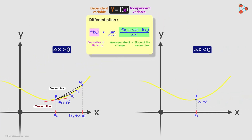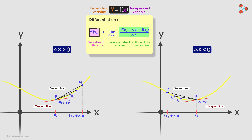This would be true even if we take delta x to be less than zero. Then x0 plus delta x will be somewhere here on the x axis, and as we find the average rate in the interval closer and closer to x0, we see that these secant lines approach the tangent line at x0. So we say that in the limit as delta x tends to zero, the average rate of change approaches the instantaneous rate of change at x0, which is nothing but the derivative of the function at x0.